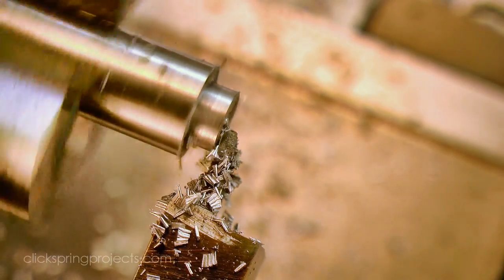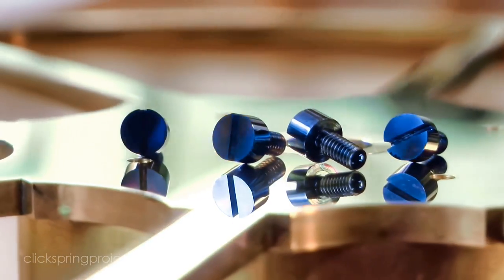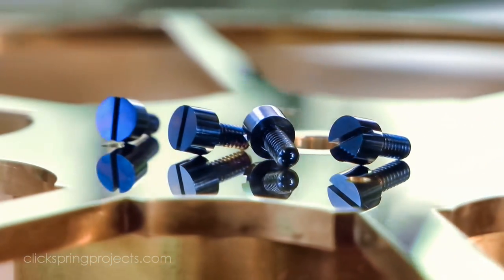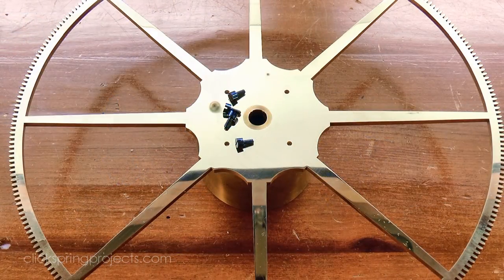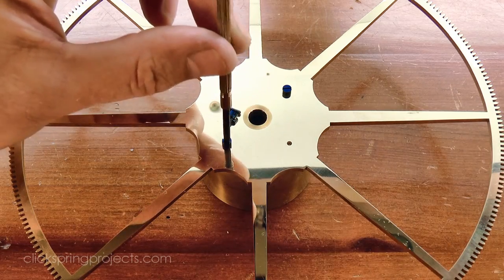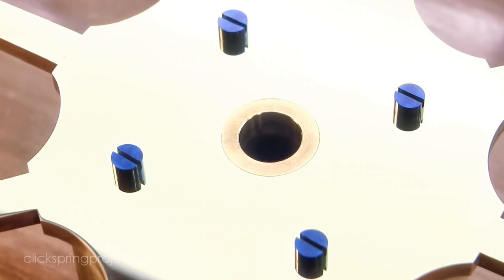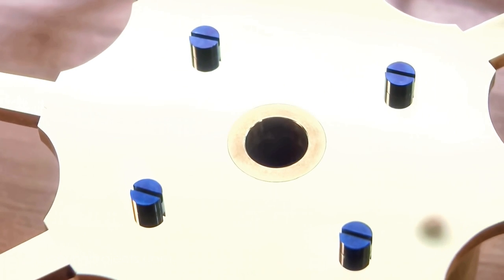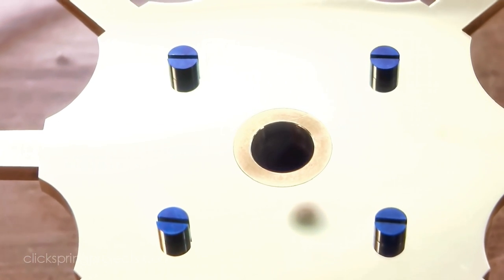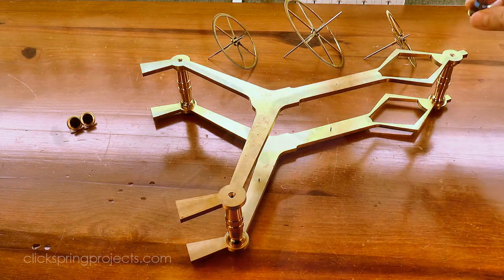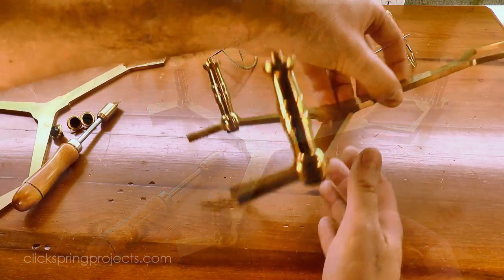And then to complete this part of the build, I turned up a set of custom screws, polished and blued them, and then used them to fasten the great wheel in place. Ok, so after all of that catch up, let's now move on to the main focus of this video, which is getting the gear train into place.